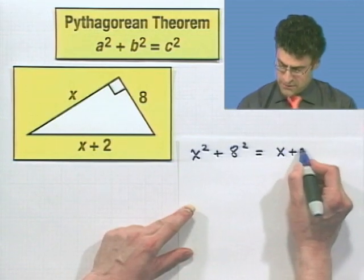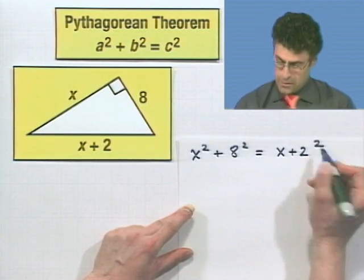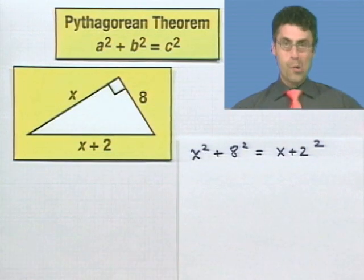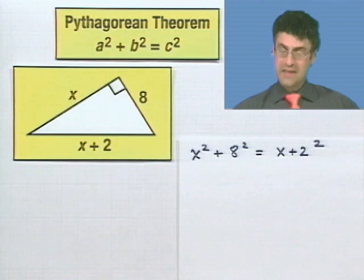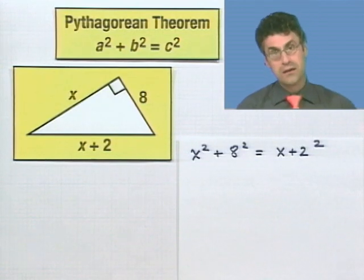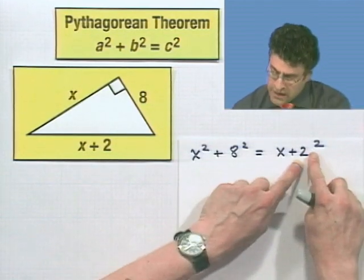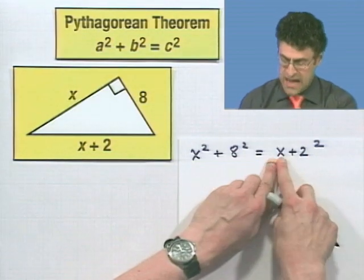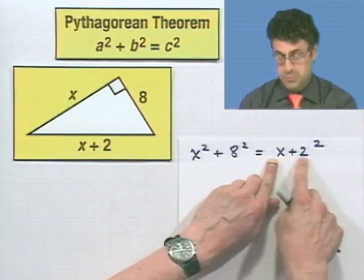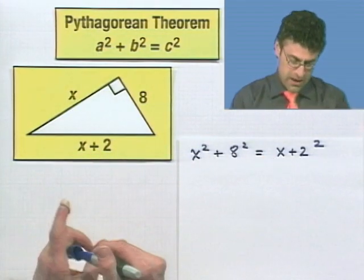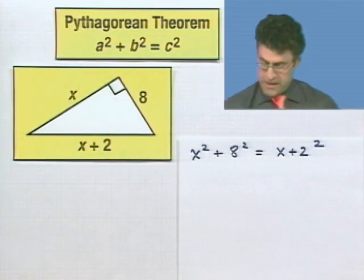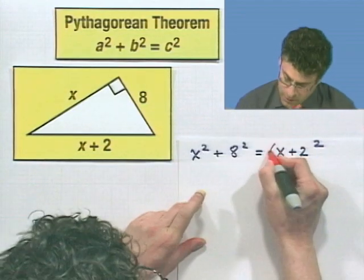And I'm going to make a mistake right here. Let's see if you can catch my mistake. Here's what's the mistake. The mistake is that this, as written, is only squaring the two. This is technically X plus two squared, which is X plus four. And that's wrong, because you have to square this entire value, which means that we have to put parentheses around the whole thing.